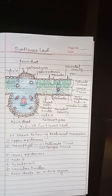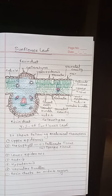The Upper Epidermis protects the underlying tissue. The cuticle and trichomes which are present check the transpiration, while stomata help in transpiration and exchange of gases.